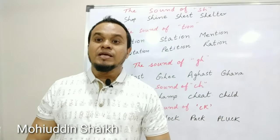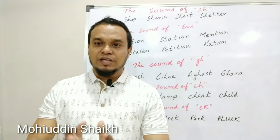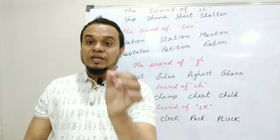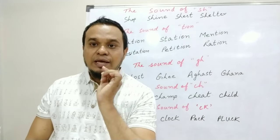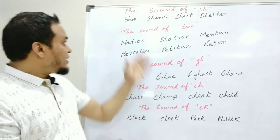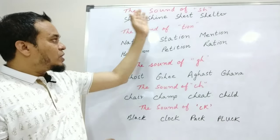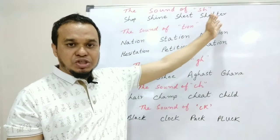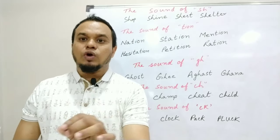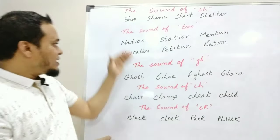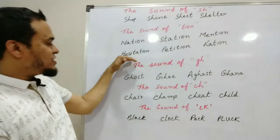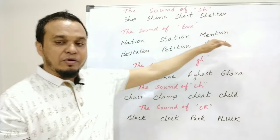I want to summarize all five rules in writing so that you understand them well. The first rule was S-H — when SH appears, the sound is 'sh'. You have to shape your mouth correctly. For example: SHOP, SHINE, SHEET, SHELTER. The second rule was T-I-O-N — you have to read TION as 'shun'. For example: NATION, STATION, MENTION, HESITATION, PETITION, RATION.